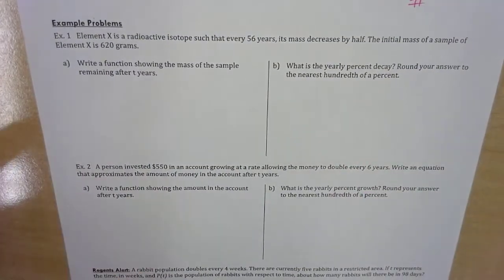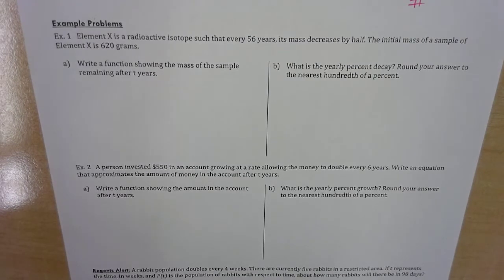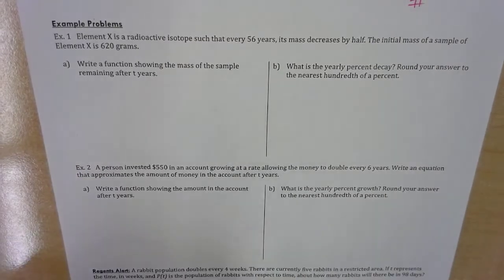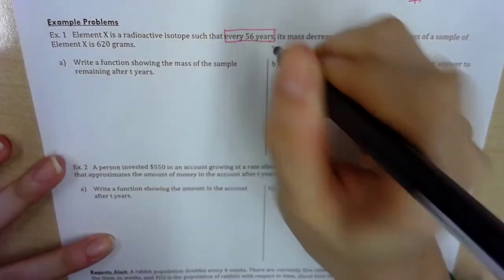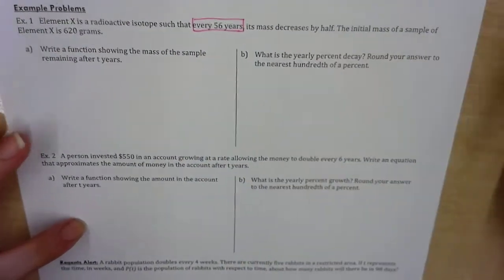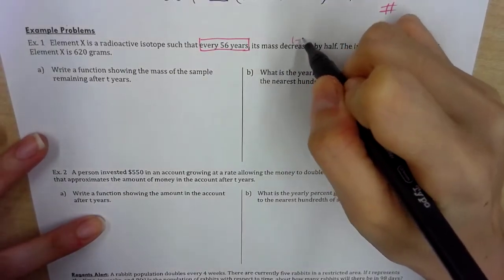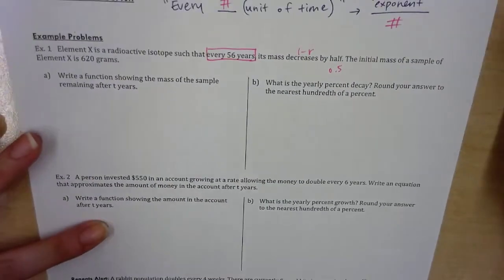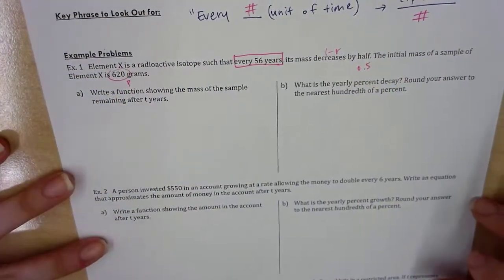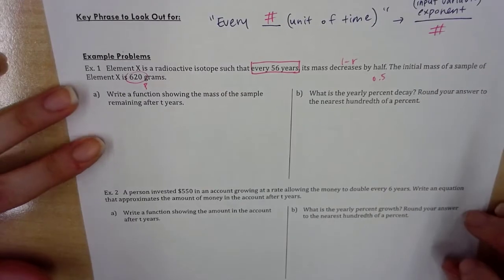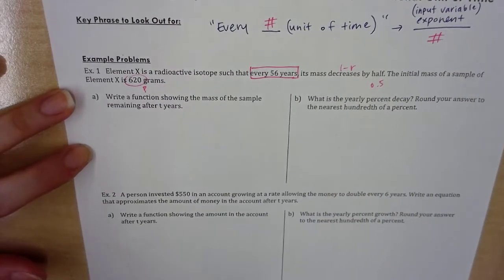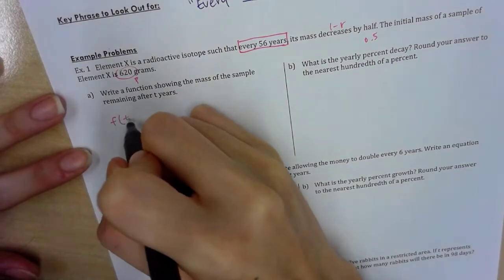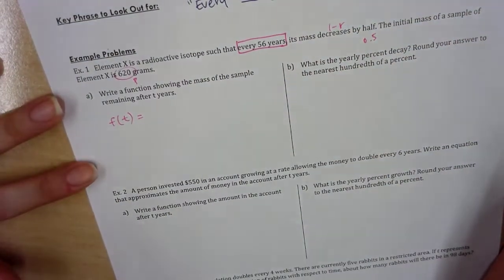Example problem 1: Element X is a radioactive isotope such that every 56 years, its mass decreases by half. So we have our catchphrase every 56 years. Its mass decreases by half. So half in percentage is, first of all, it's 1 minus r, and this is going to be 50%, which is turning to decimal 0.5. Initial mass is labeled as p.